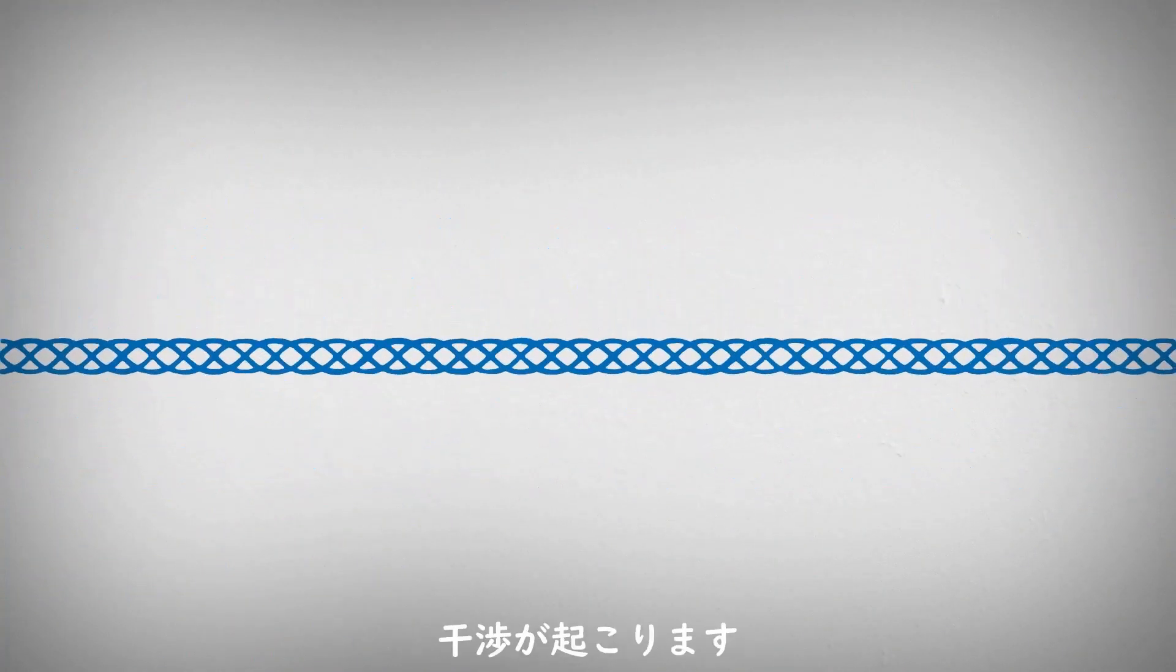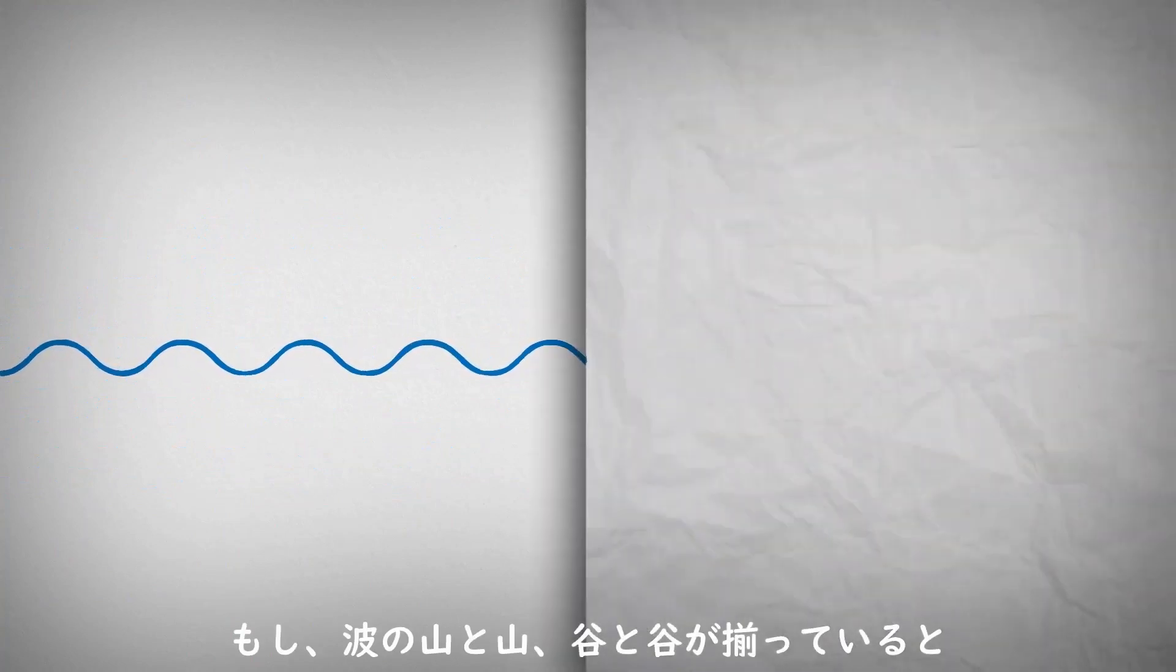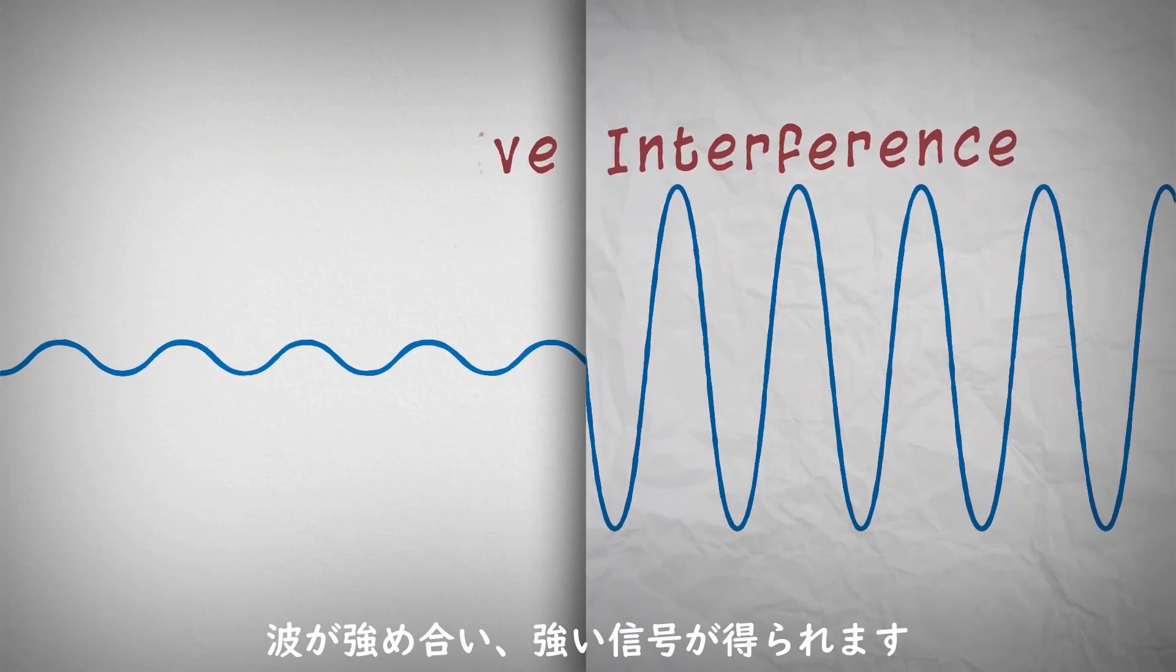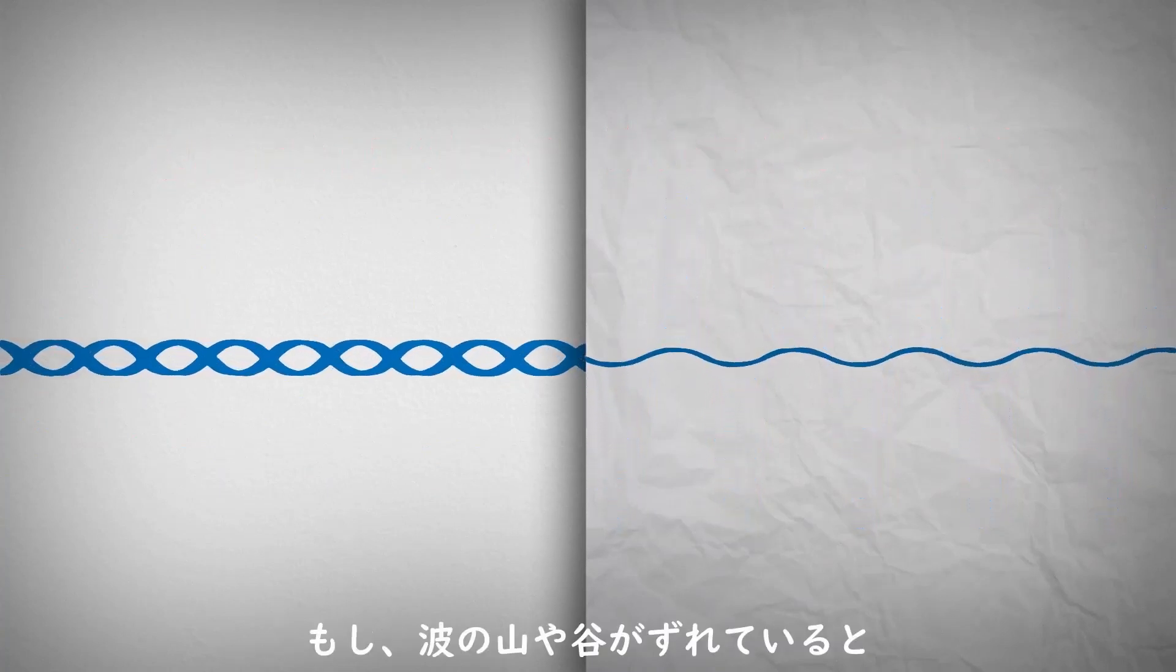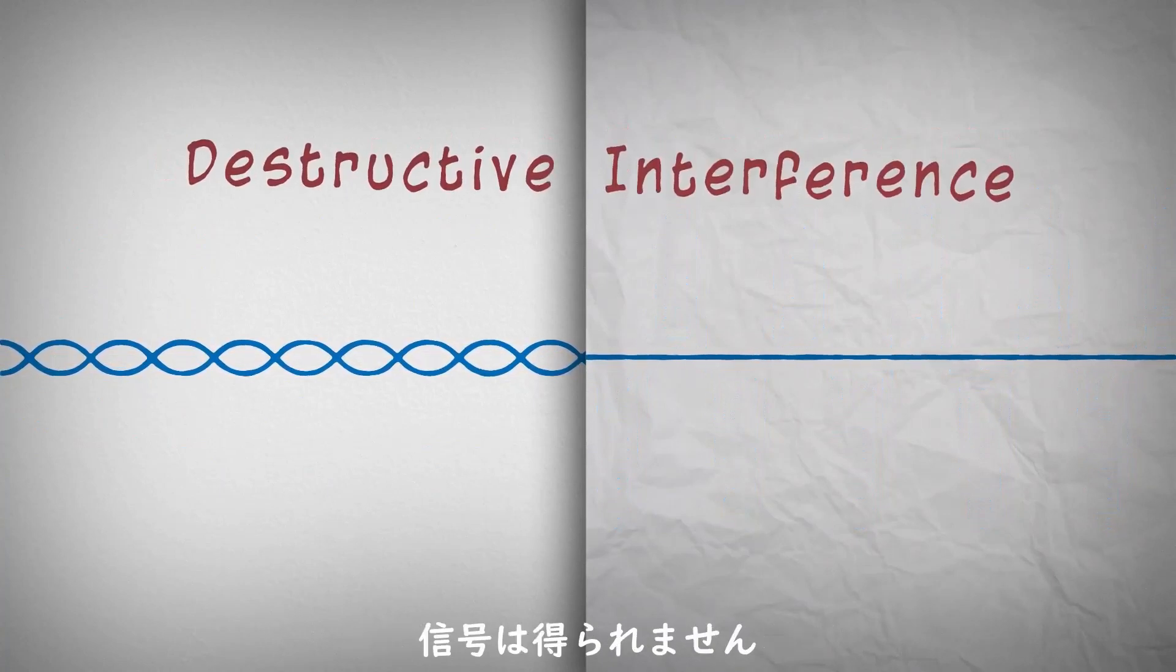Interference occurs when X-rays interact with each other. If the waves are in alignment, the signal is amplified. This is called constructive interference. If the waves are out of alignment, the signal is destroyed. This is called destructive interference.